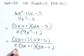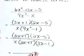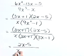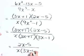Now let's reduce by canceling those common factors. Let's rewrite this then as 2x minus 5 over x times 3x minus 1 in its reduced form.